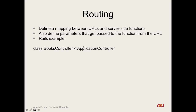On Rails, you can make a `BooksController` that subclasses `ApplicationController` and define an `update` method. One drawback to Rails is that many things happen magically — because `BooksController` subclasses `ApplicationController`, it will automatically create a route like `/books/update` to this method without you manually defining it. That's actually one of the big drawbacks of Rails: it does magic, so it's hard to understand what's going on.